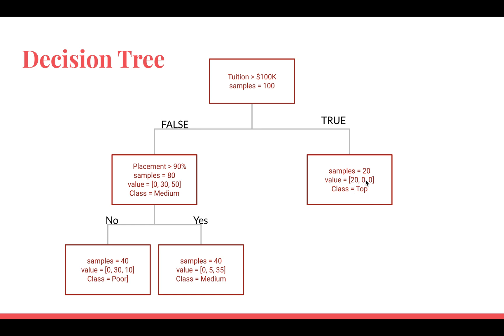There are no universities here which belong to either medium or poor. This is what is a pure node—it contains class of only one kind. It's not containing three types of classes within it. It has cleanly classified these 20 universities to be belonging to the class top. On the left hand side, our node is not that pure. For the remaining 80 samples, 30 belong to class poor and 50 belong to class medium. Because medium is higher in number, we call this node a medium node.